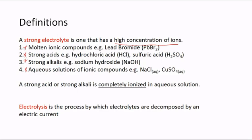Examples of strong electrolytes are solutions of ionic compounds, for example sodium chloride dissolved in water, and copper sulfate dissolved in water. A strong acid or strong alkali is completely ionized in solution — the key point is 'completely ionized'. This means there is a high concentration of ions present in the substance.